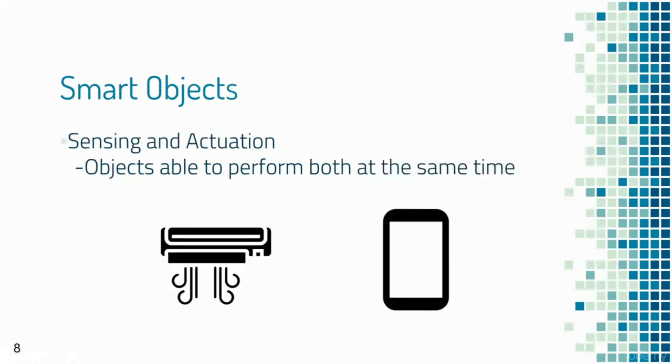Some smart objects are equipped with both sensing and actuating modules and can perform both functions. A simple example is your mobile device, which can detect your motion through the accelerometer sensor and alert you when, for example, you are sitting for too long. That too is an example of an application of the Internet of Things.